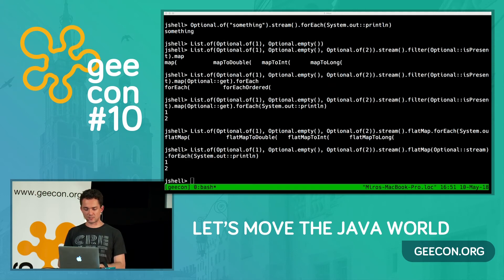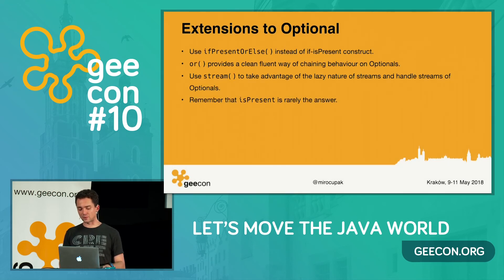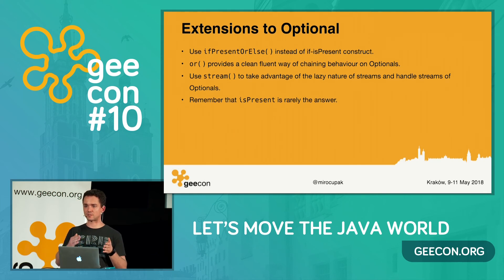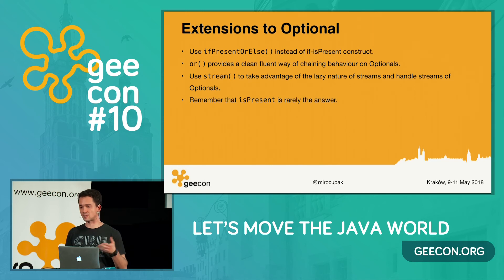To recap optionals: use ifPresentOrElse() instead of an if-statement with isPresent(). Use the method or() for a clean, fluent way of chaining behaviors on optionals. Use the method stream() to take advantage of lazy stream behavior and to handle streams of optionals. And remember that isPresent() is rarely the best solution — usually one of the methods we've covered allows you to solve the problem better.